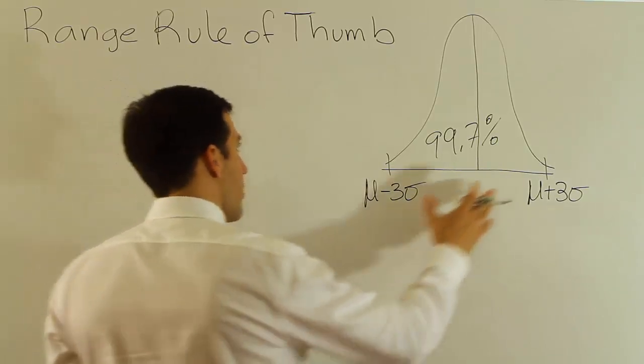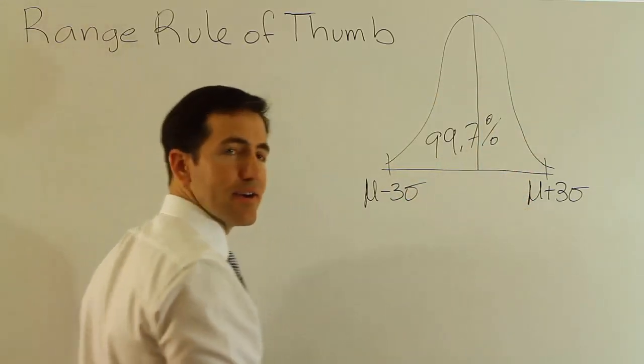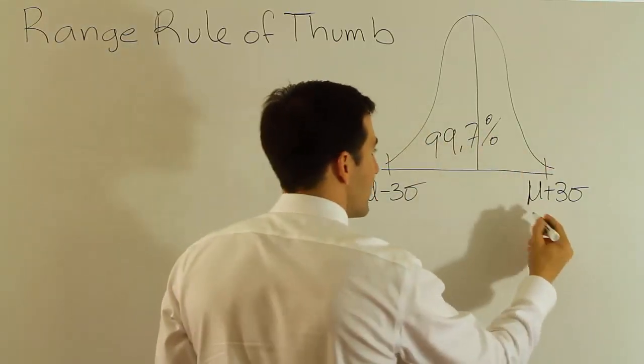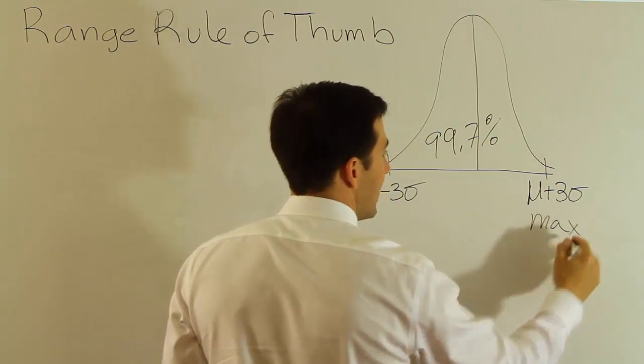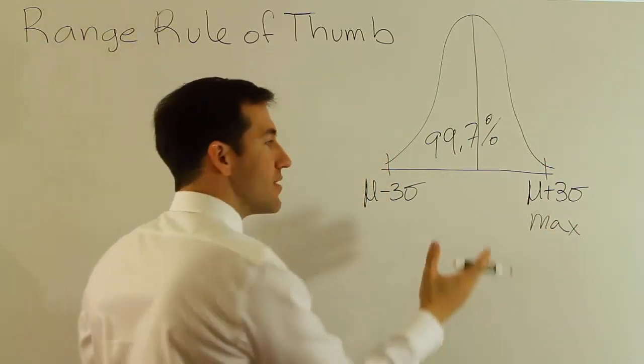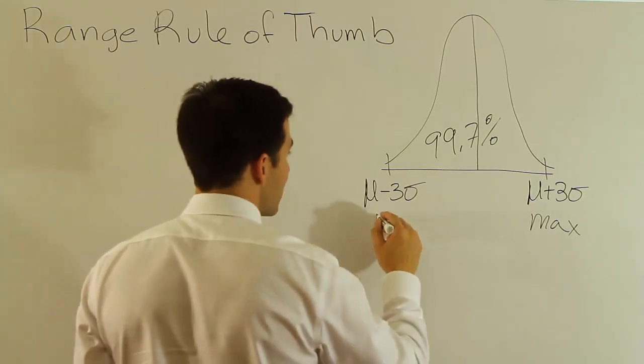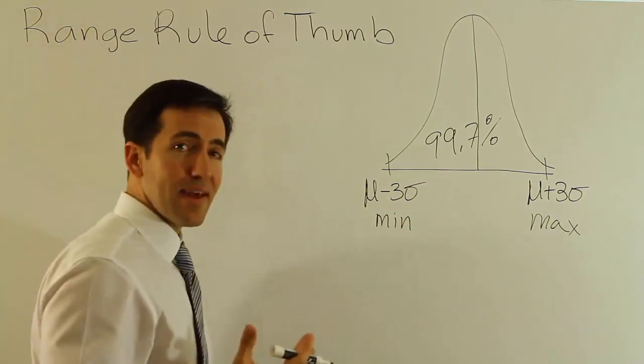Now, since this is almost all the data here, I could kind of call that the maximum. I mean, think about it. If this is almost all the data, that's sort of a maximum value. Of course, there are values that are bigger, so it's not really a maximum, but it's approximately a maximum. And this is approximately a minimum, isn't it? If that's the case...